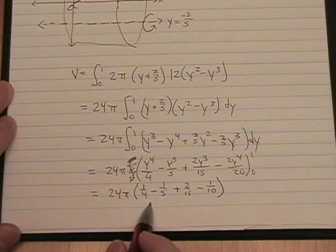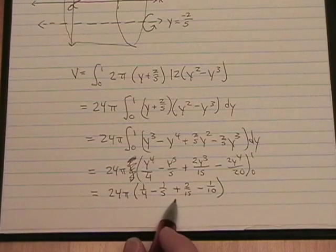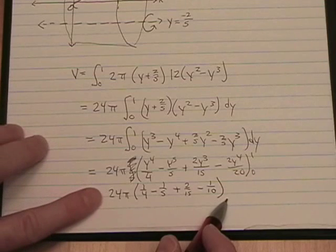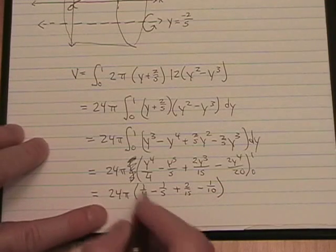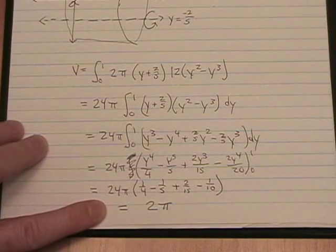And, with a little work with our fractions, we're going to end up with 3 over 60 here plus 2 over 60 here, which is 5 over 60, which is 1 twelfth. 24 pi times 1 twelfth, believe it or not, is 2 pi.